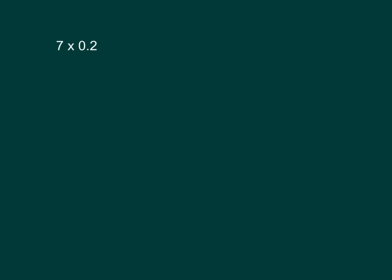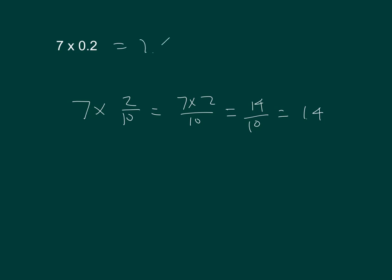Seven times two-tenths. I'm going to write this problem expressing the decimal as a fraction. That equals seven times two-tenths. When we multiply, we get seven times two over ten, which equals fourteen-tenths, which equals 1.4. Fourteen-tenths as a decimal is 1.4, so seven times two-tenths is equal to one and four-tenths.